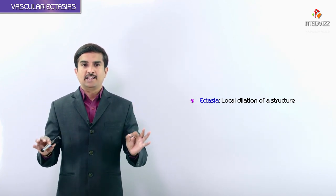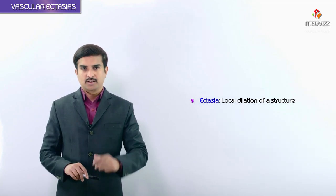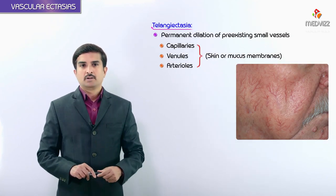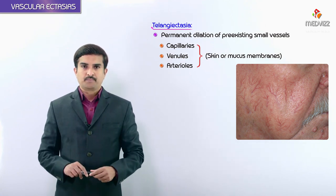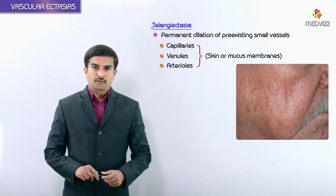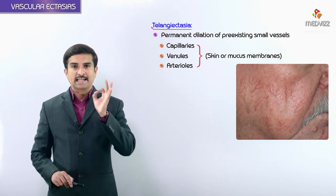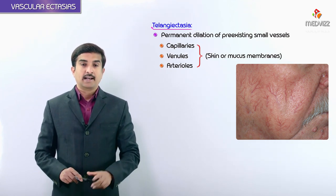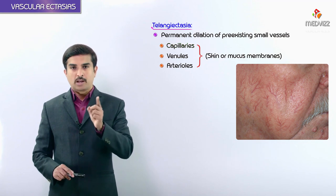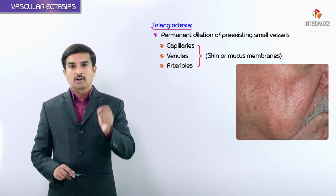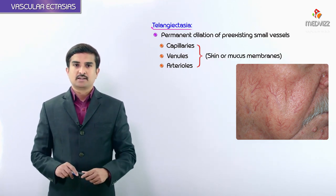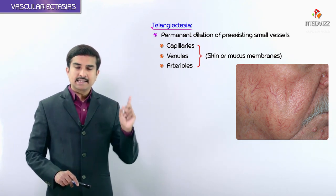Any local dilation of a structure is called ectasia. We also have another term called telangiectasia, which is used to describe a permanent dilation of pre-existing small vessels — specifically capillaries, venules, and arterioles.